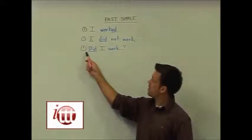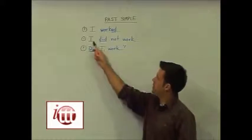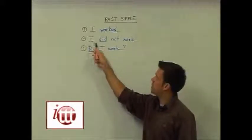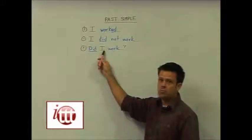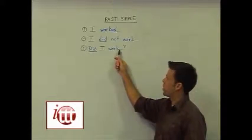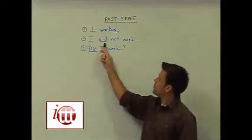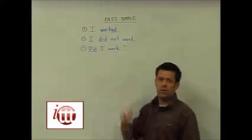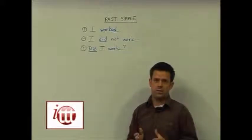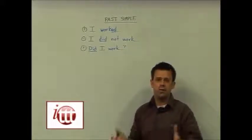Here we have 'Did I work?' Again, you can see the inversion of the position of the helping verb and the subject to create our question. When we use 'did', we can use it for any of the subjects in our sentence — I, he, she, etc.